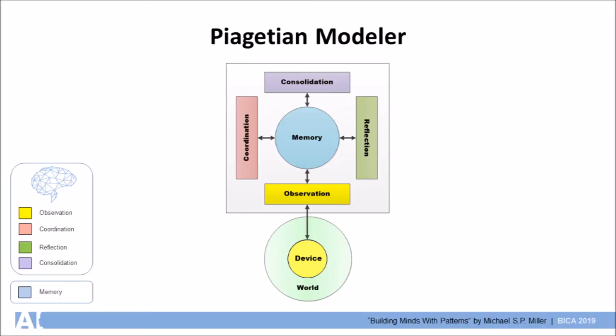The Piagetian modeler combines cognitive system design patterns, a neurosymbolic knowledge graph representation called neural propositions, and Piagetian developmental theory to form a cognitive architecture.